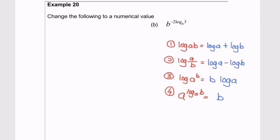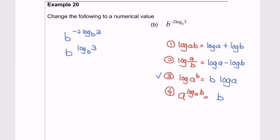Now I'm going to discuss Question 20b. We are given b to the power of negative 2 log base b of 3. Applying rules number three gives b to the power of log base b of 3, all to the power of negative 2. Next, applying rules number four — observe that the base and the log base are both b — so we get 3 to the power of negative 2, which equals 1 over 9.